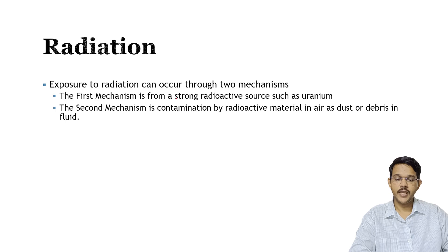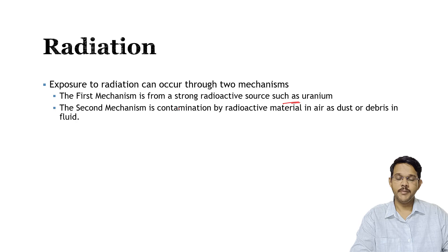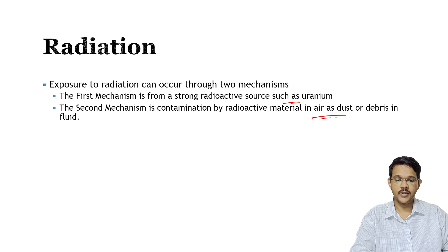Exposure to radiation can occur by any of two mechanisms. First, when the person is exposed to a source of radiation such as radioactive uranium. Second, when the surrounding area is contaminated with radioactive materials — like dust of radioactive material is exposed in the air, or debris of radioactive material is mixed into fluids or drinking water.